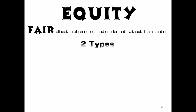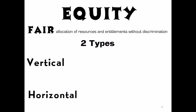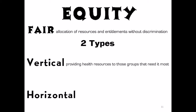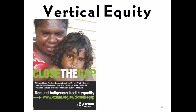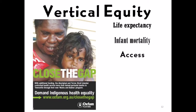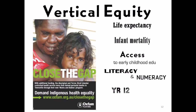Equity involves the fair allocation of resources and entitlements without discrimination. There are two types to consider. Vertical equity is providing health resources to those groups that need it most, such as the Aboriginal and Torres Strait Islander group. The Close the Gap initiative is implemented by the Australian Government to try to reduce the life expectancy gap, infant mortality gap, increase access to early childhood education, improve literacy and numeracy levels, improve Year 12 attainment levels, and improve employment in Aboriginal and Torres Strait Islander communities. This is a great example of vertical equity, where extra funding is applied to bring Indigenous health up to the same level as the rest of the population.